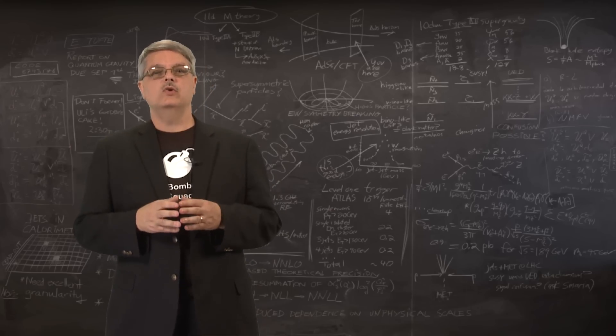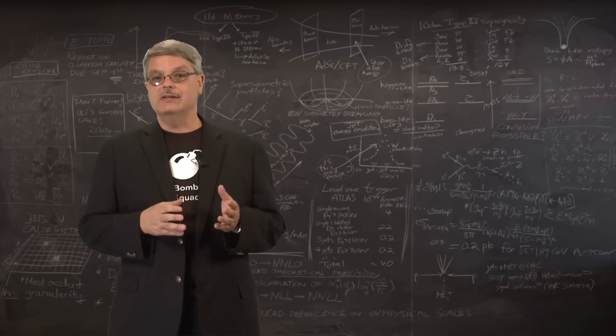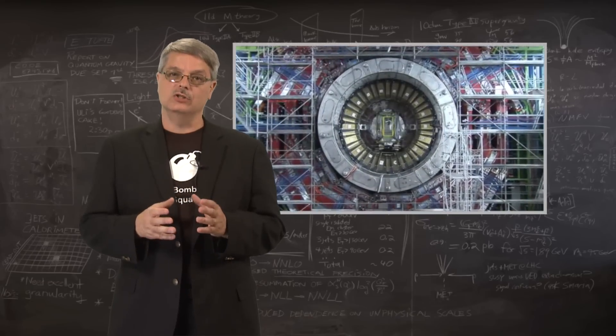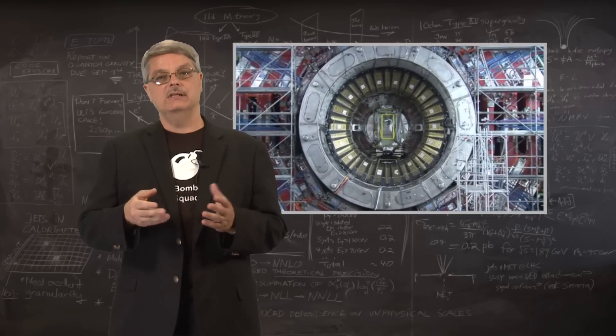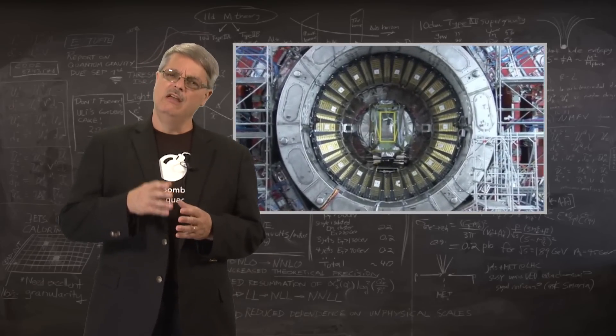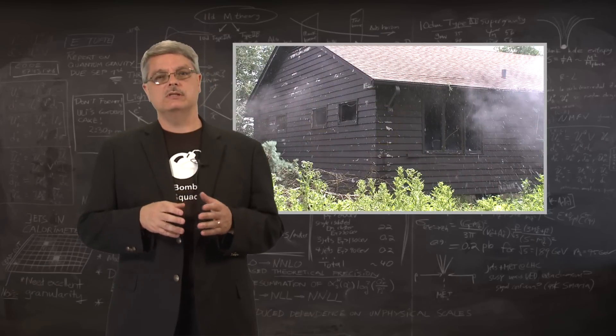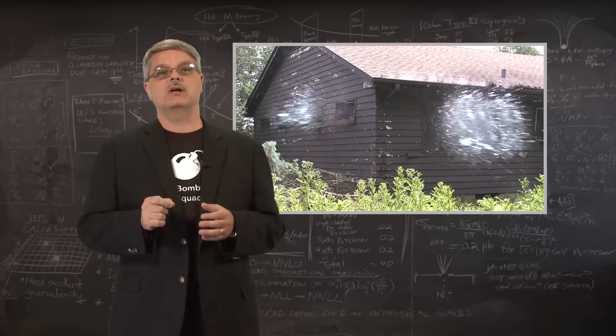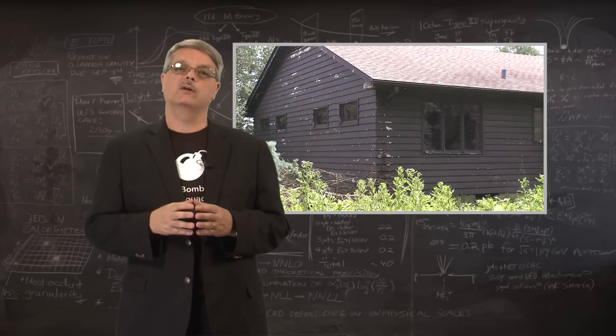So we see that even though we can't directly observe particles leaving the collision, we can carefully design a detector that surrounds the collision and see how the particles interact in the detector. From that, we can infer which particles left the collision, and then finally, we can work our way backwards to understand what physical process caused what we saw in our equipment.